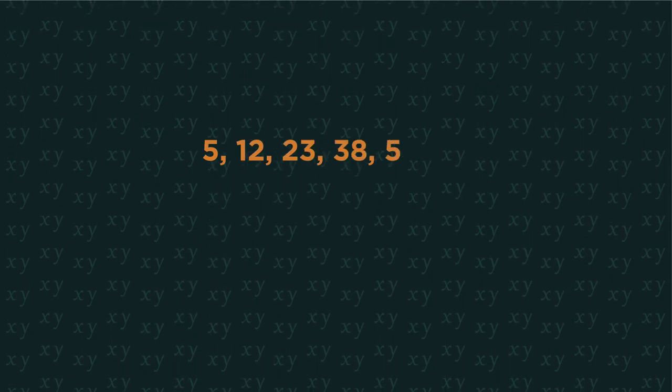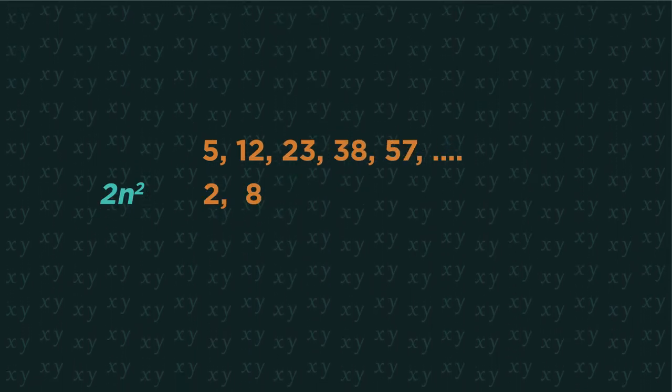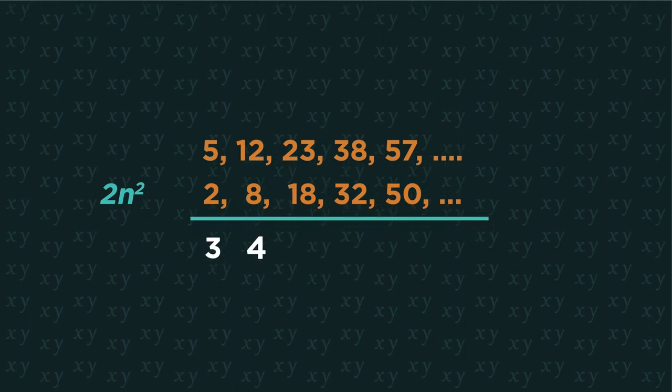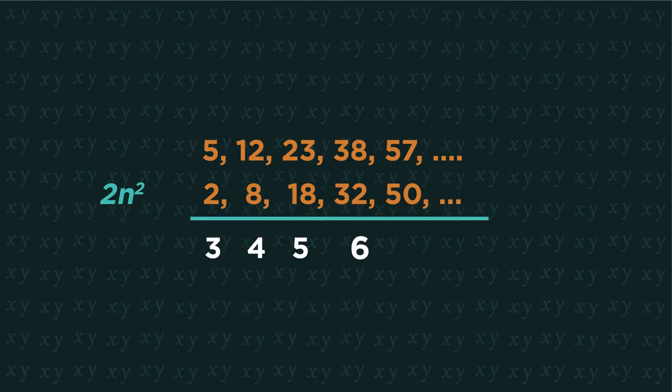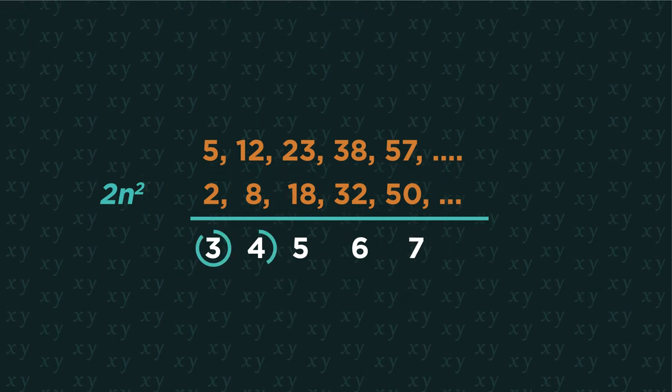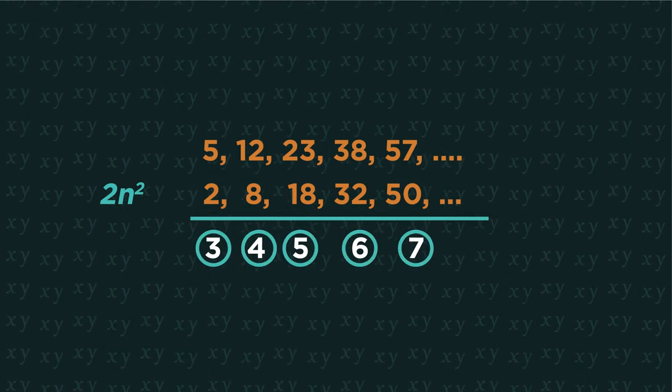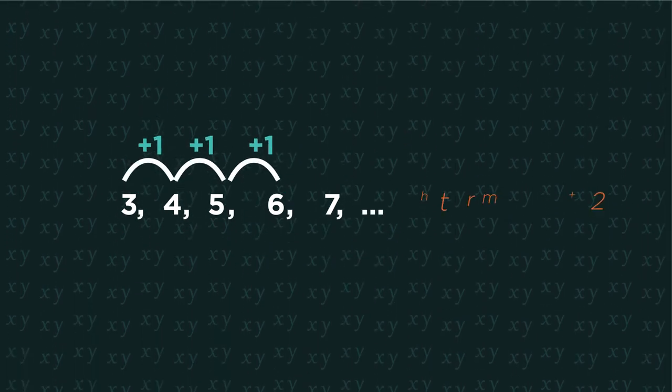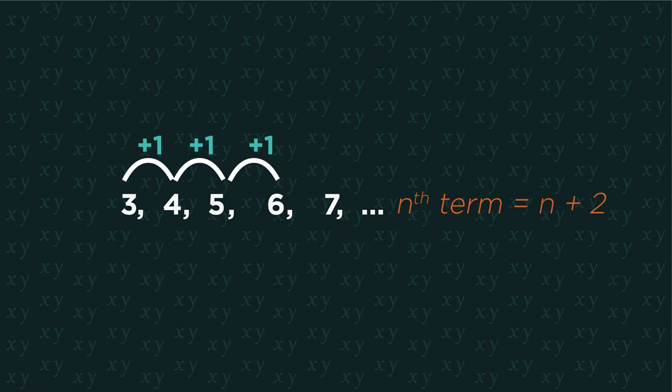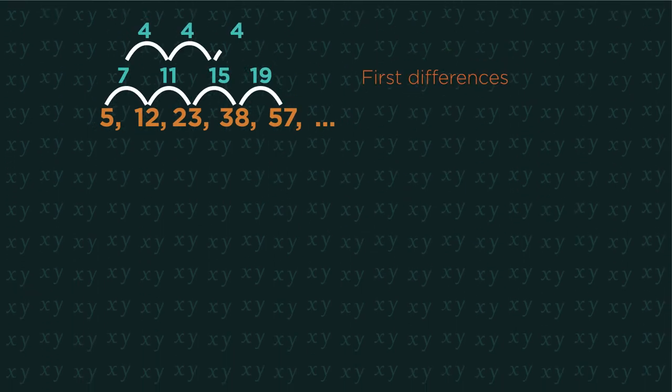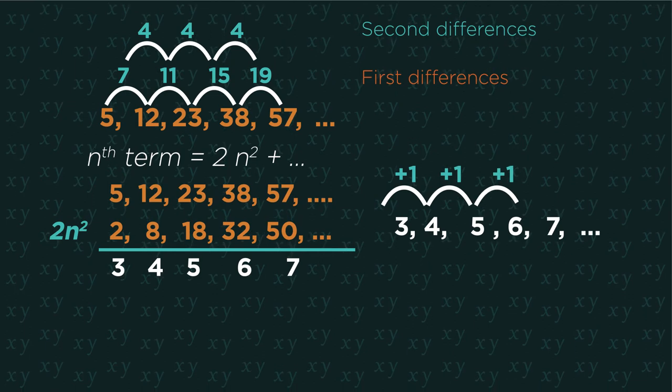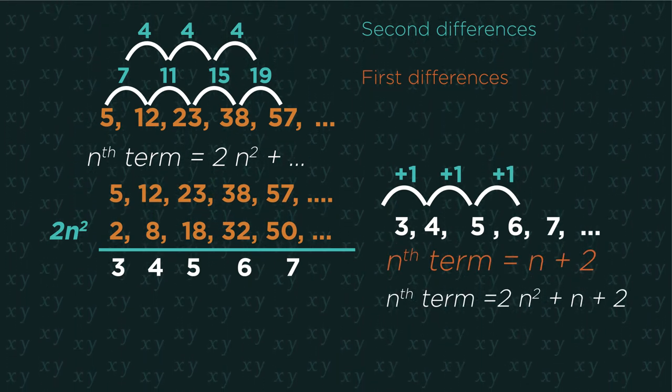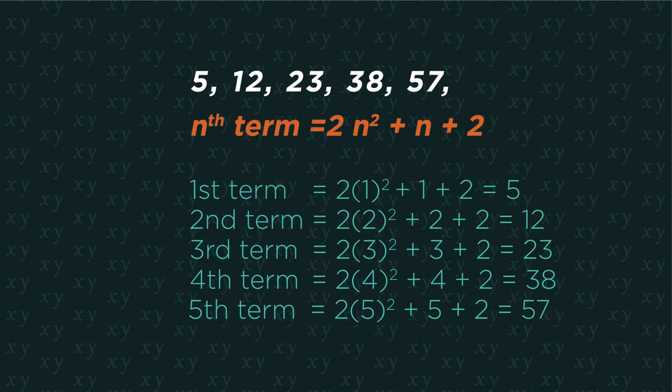Now write out the original sequence and 2n squared underneath it. Find the difference between the two. Now you need to find the nth term rule for this. It's n plus 2. So the nth term rule for this quadratic sequence is 2n squared plus n plus 2. And as always, check it.